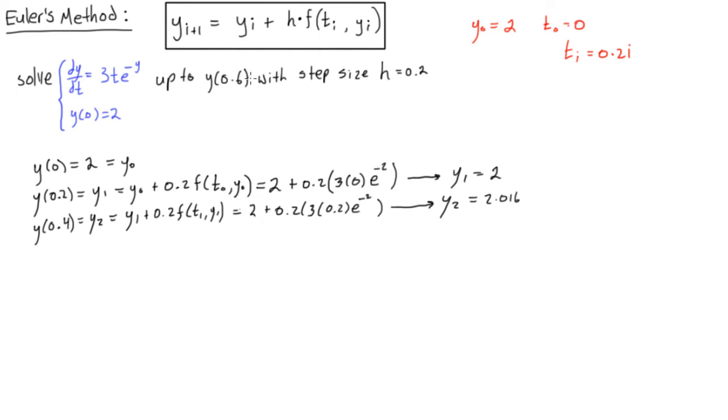All right. So, now we only want it to go up to y at 0.6. We'd go a lot farther, but that's just very repetitive. You guys don't need to watch me do the whole thing. So, we have y at 0.6. This is going to be equal to our y3 value. So, it is y2 plus 0.2 function evaluated at t2 y2. So, we get 2.016 plus 0.2 times 3 times 0.4. Now, we've incremented our t value again to t2 times e to the power of negative 2.016. That's our y2 value. So, when we go and solve this, we'll get y3, which is y at 0.6. And this is approximately 2.0482. Maybe make that readable. 2.0482.